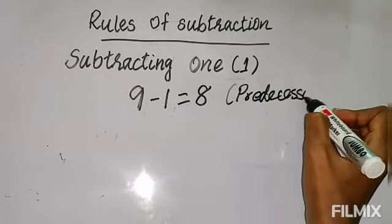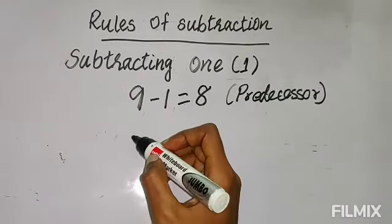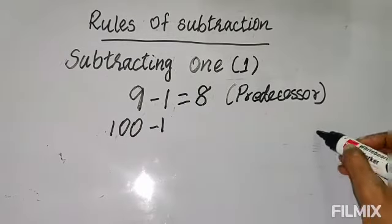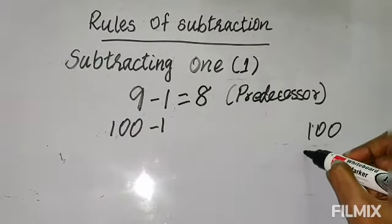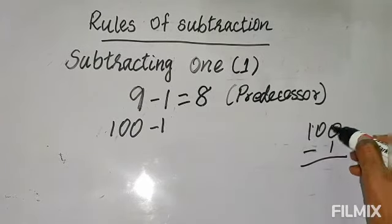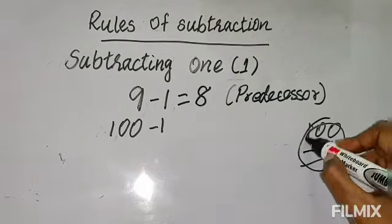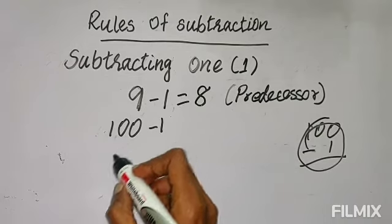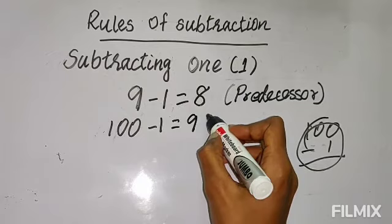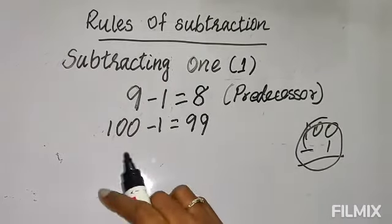When you minus 1 from any number, the difference will be the predecessor of that number. Suppose you take 100 and minus 1 — most children write it out and find it difficult to borrow, making many mistakes. Whenever 1 comes, directly write the predecessor. What is the number before 100? It's 99. So that is the answer. If you subtract 1, the difference is the predecessor.